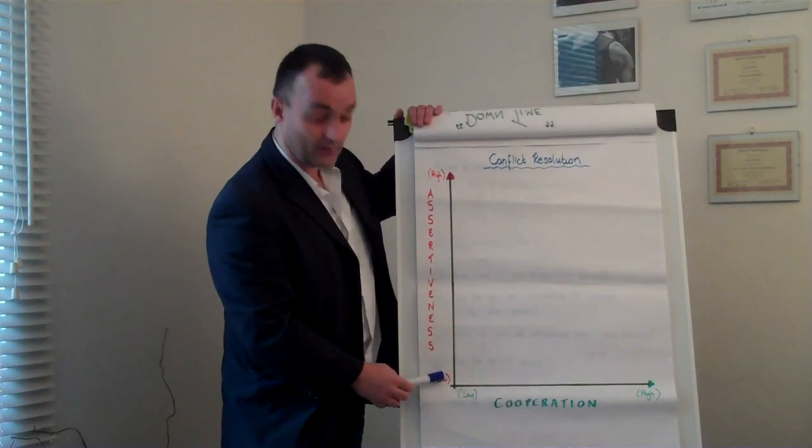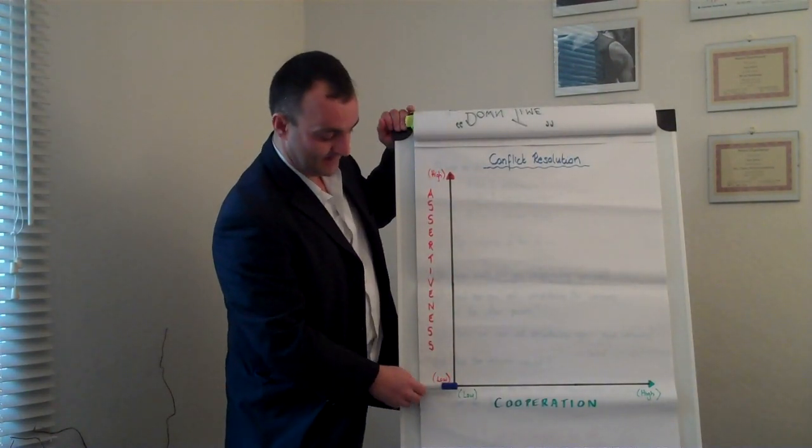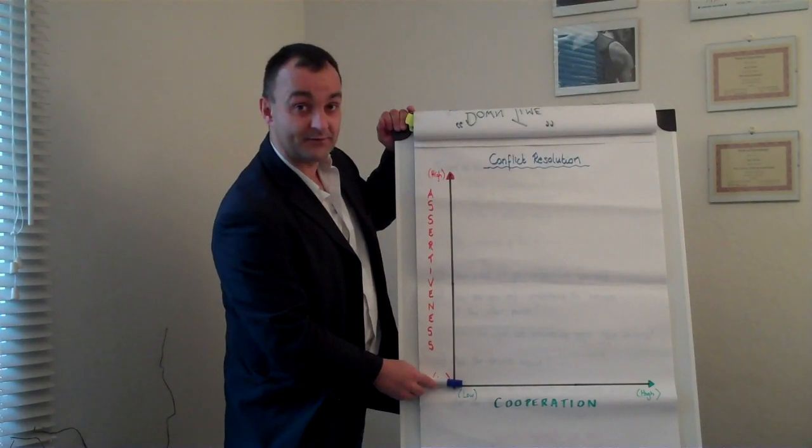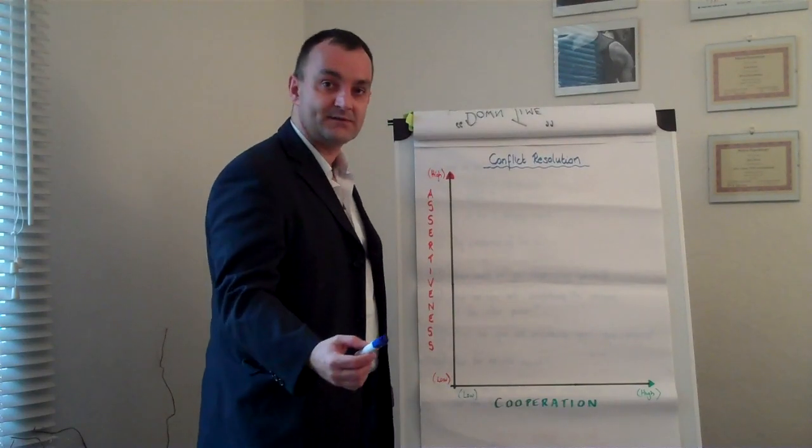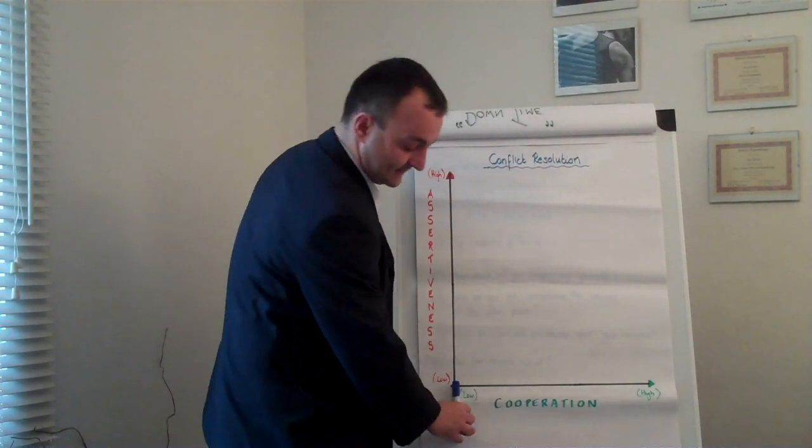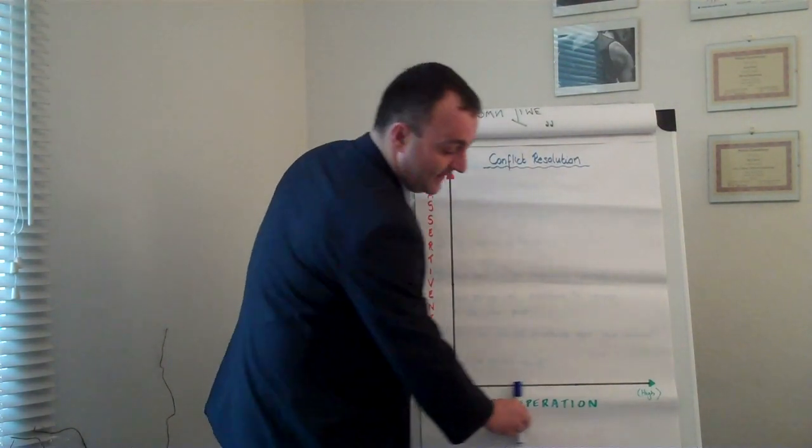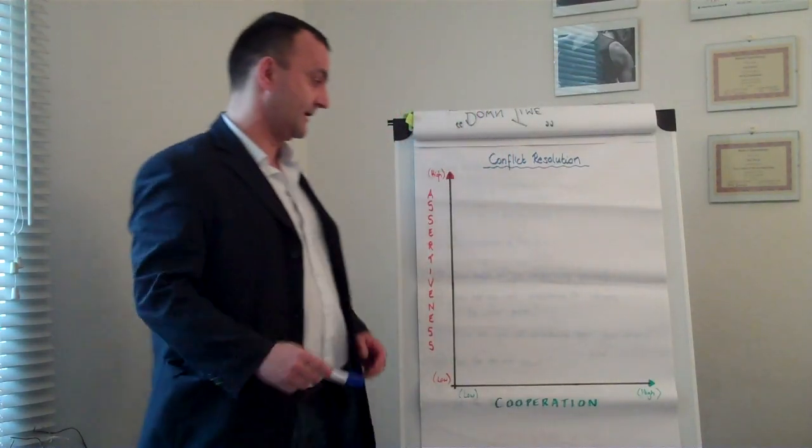On the chart here we've got your level of assertiveness, from low levels all the way up to high levels. And also your levels of cooperation with that person or situation, from low levels of cooperation all the way to high levels.